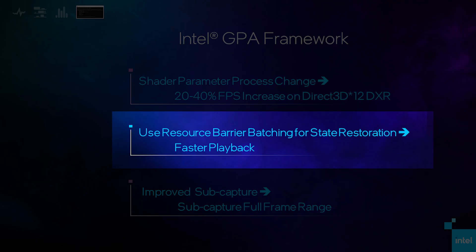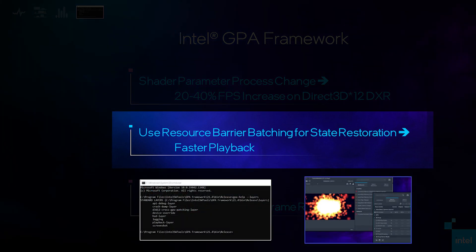This means your profiling process will be faster now when you use Intel GPA for profiling your DXR apps. Second, for GPA Framework, we were able to improve playback performance by using resource barrier batching for state restoration. This applies to deferred and subcapture streams, and also affects the initial boot time of the stream. So both for Graphics Frame Analyzer and GPA Framework, the stream loads faster, plays back faster, and each time you change selection in Graphics Frame Analyzer during analysis, the data is processed faster. This optimized playback speeds up your profiling analysis.